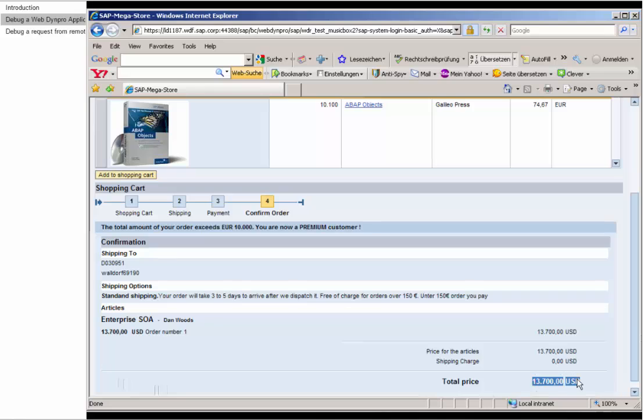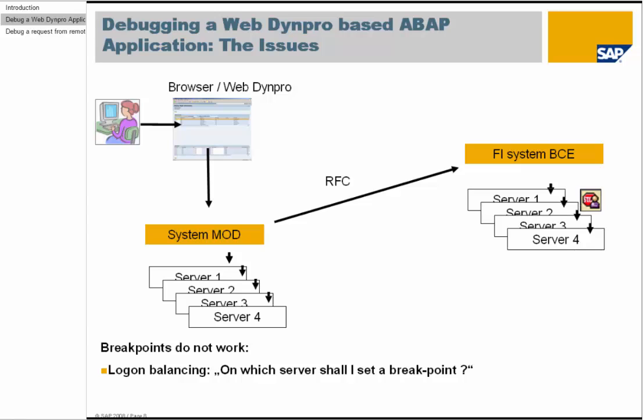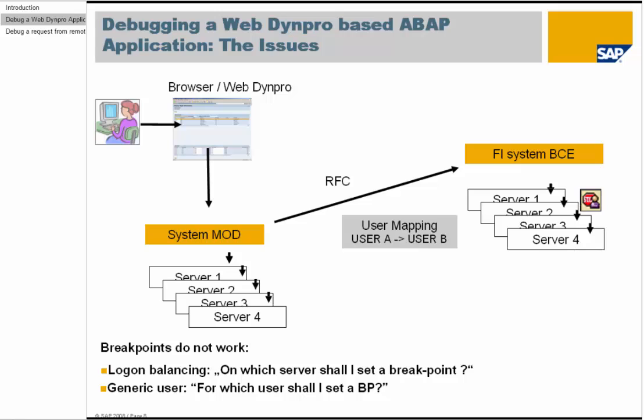Why are we having this problem? In general, there can be different reasons for this behavior. One reason is that there are normally multiple servers in a backend system of this type, and login balancing decides which server a request is assigned to. The user breakpoint, however, is only active on the server where it is set. If the request is executed on another server, it does not stop.